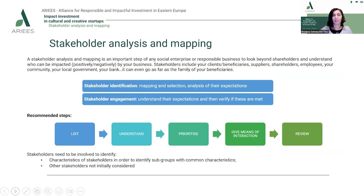Before launching a social enterprise or responsible business, it's crucial to perform a thorough stakeholder analysis and mapping. The idea is to look beyond the shareholders and really understand who can be impacted by your business — both positively and negatively. Stakeholders can include your clients, beneficiaries, suppliers, partners on the value chain, shareholders, employees, local communities, local government, even your bank — and it can extend as far as the families of beneficiaries. It's important to identify key stakeholders, map them, select the most relevant ones, and analyze their expectations.